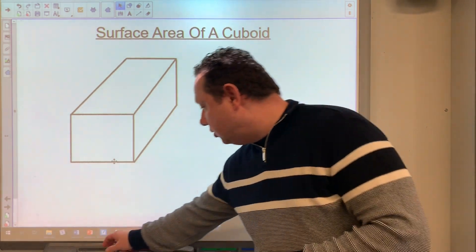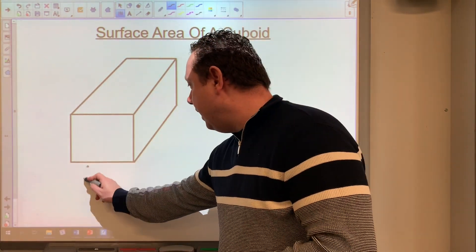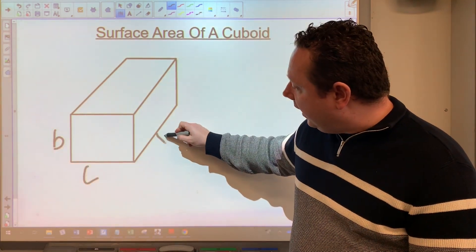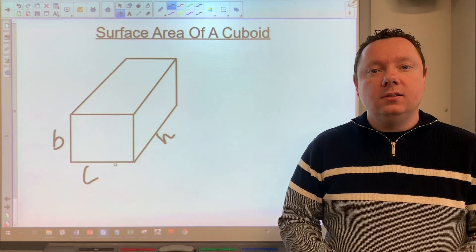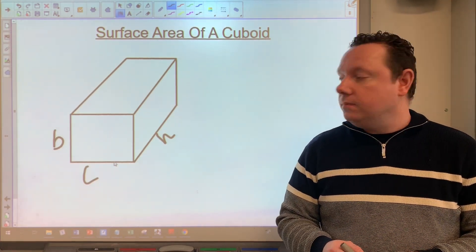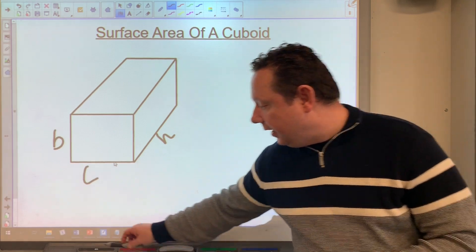So first of all we'll start labeling the sides. There's the length, there's the breadth, and then there's the vertical height. So we've got L, B, and H, the familiar sides of a cuboid from the volume that we normally do, and we want different areas.